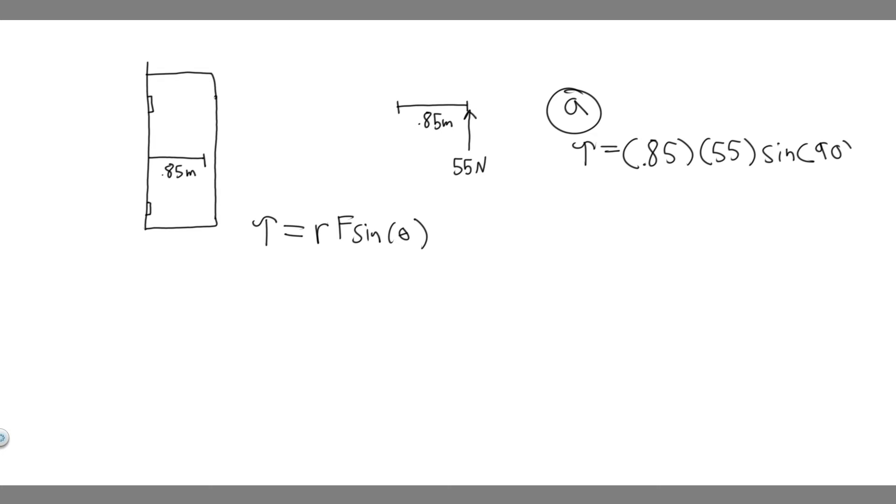So theta is going to be equal to 90. And you need to know that the sine of 90 is just 1. So really, in this case, since the force is being applied perpendicular, it's just 0.85, which is the radius times the force, which is 55. So you want to do 0.85 times 55. And when you do that, you're going to get the torque is equal to 46.75.